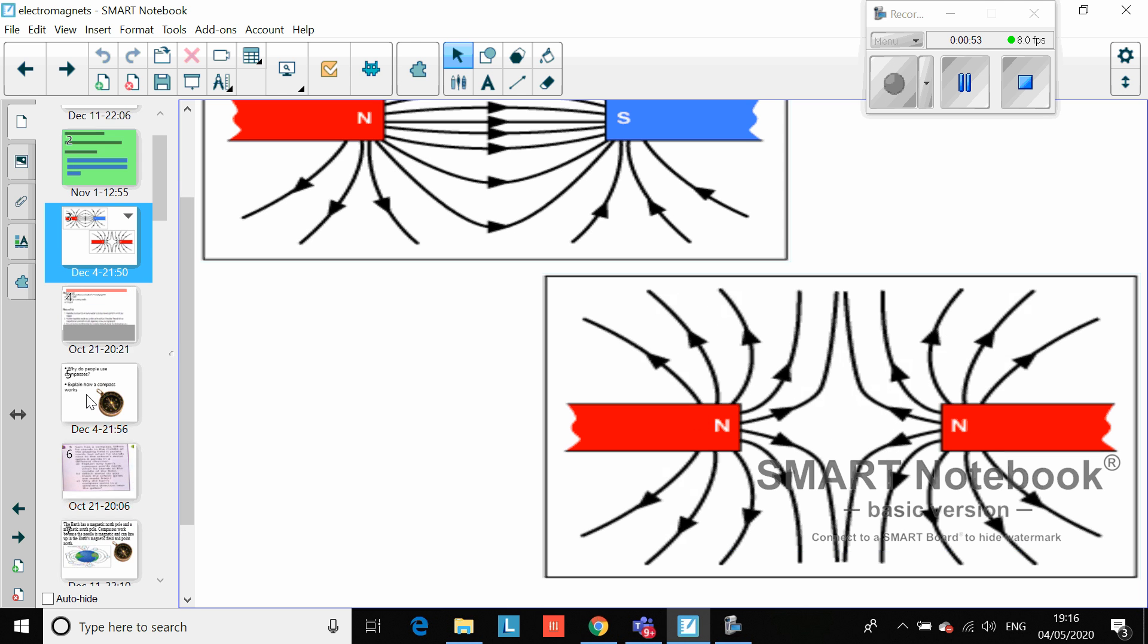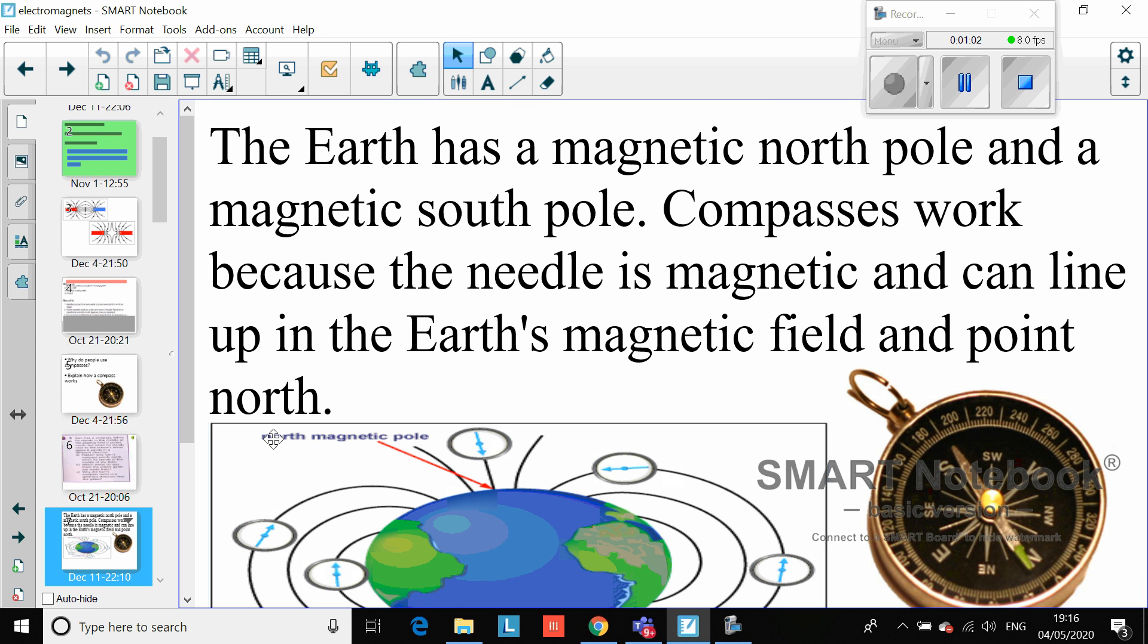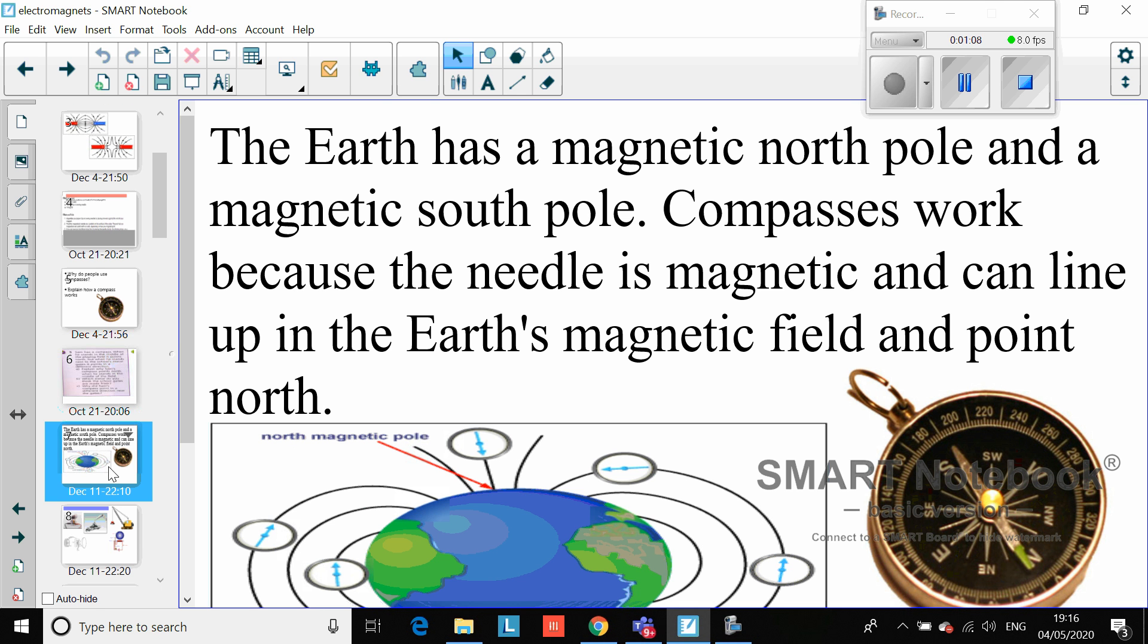About 200 years ago, scientists realized that Earth has a magnetic north pole and a magnetic south pole, but they also started to find a link between electricity and magnetism. It's one of the fundamental forces in nature that we don't often think about.